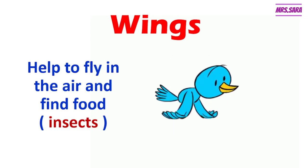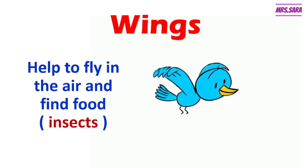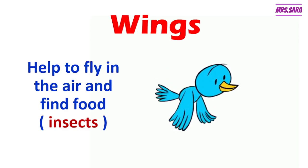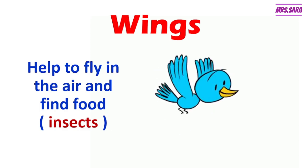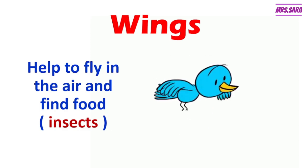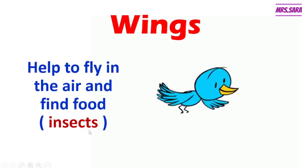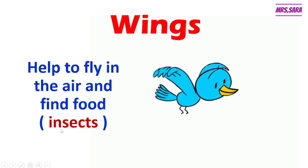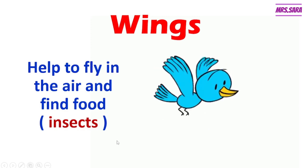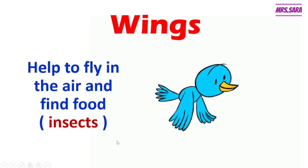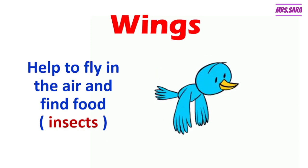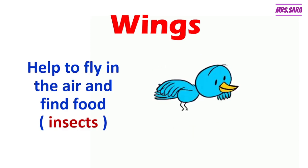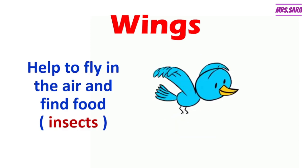Why does a bird fly in the air, Primary 2? To find the food. Which is called — do you remember? — insects. So birds fly in the air using their wings to find the food, which is called insects.